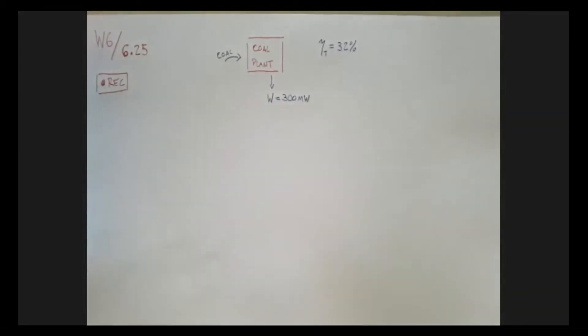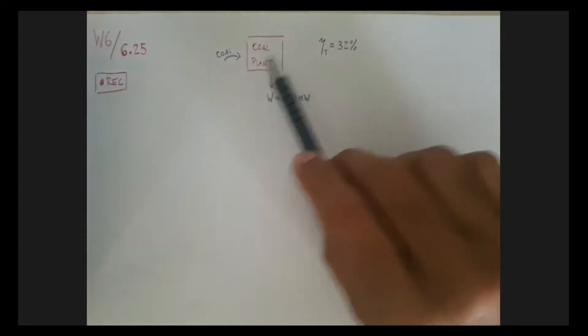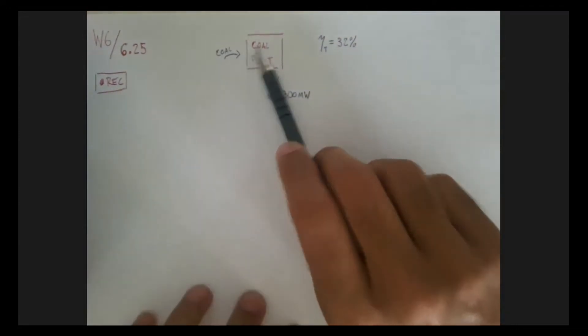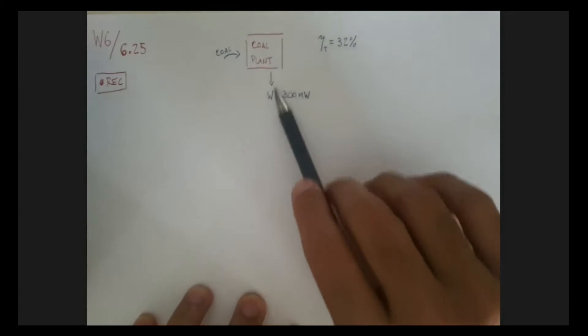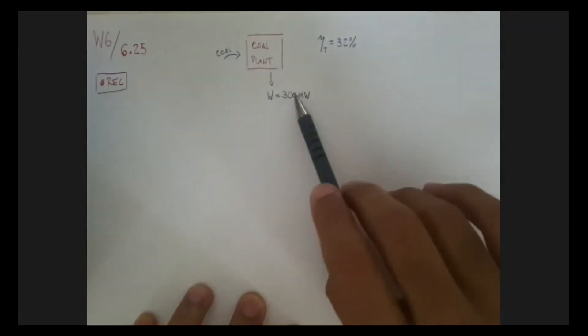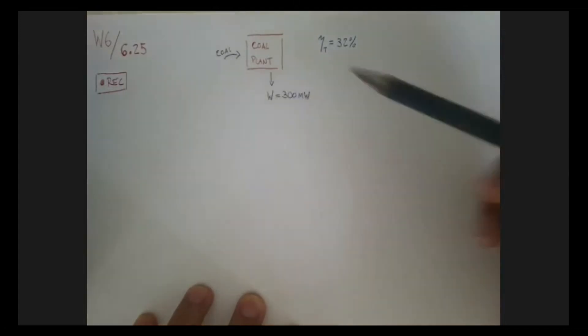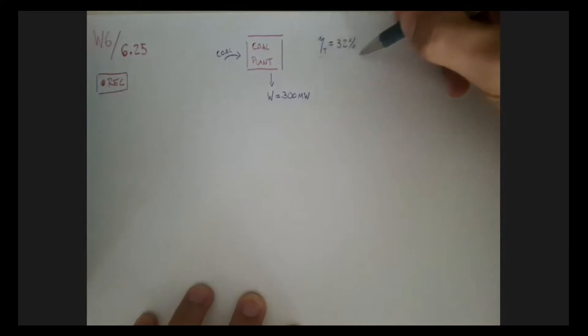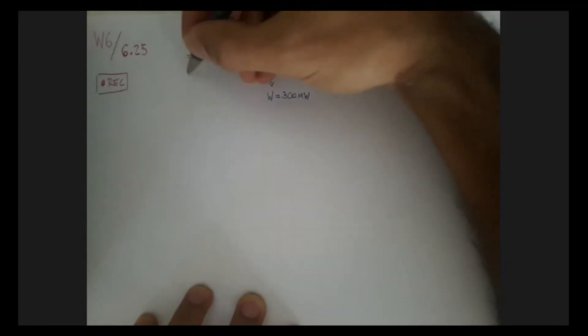So we have a little coal plant there, we're putting coal into it, and it's spitting out useful energy in the form of power, 300 MW of power. Now my first question is the following: if the plant is 32% efficient, does that mean that I need to input into my coal plant less than 300 MW, exactly 300 MW, or more than 300 MW?